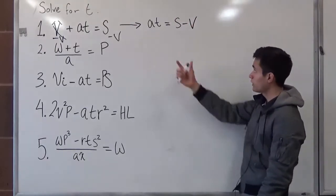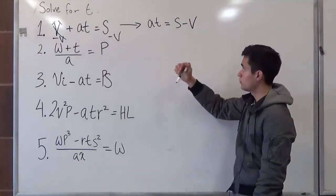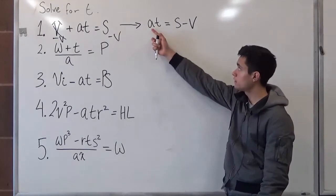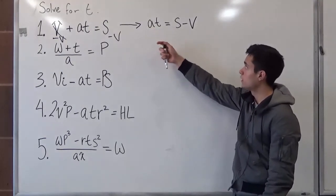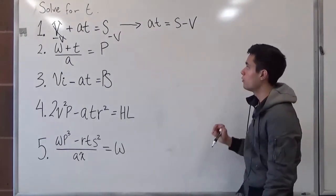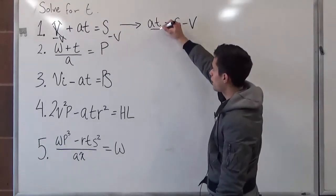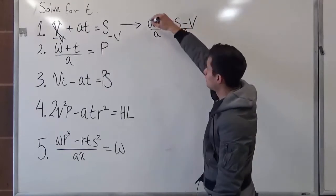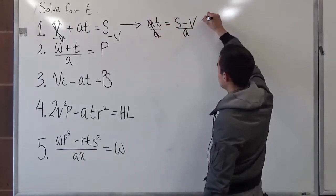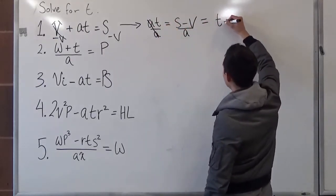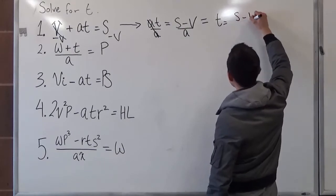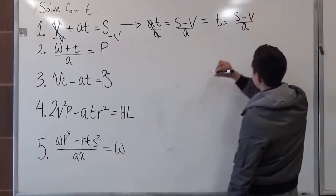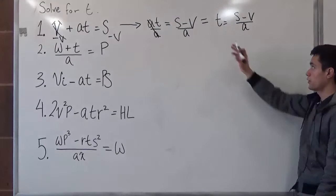So now that we have this portion, we still have a, which is being multiplied by t. We want to get t by itself. Always keep that in mind. So we divide it by a, divided by a. This cancels out. So now we're just left with t is equal to s minus v over a. So the first problem is done.